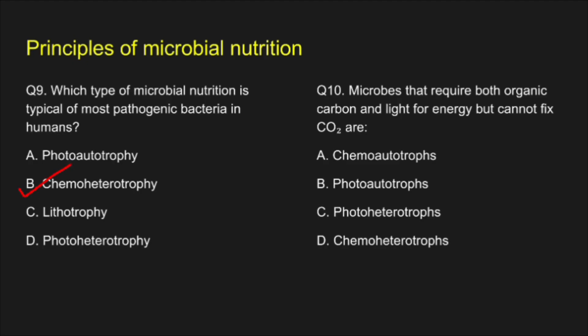Question 10. Microbes that require both organic carbon and light for energy but cannot fix carbon dioxide are — A. Chemoheterotrophs, B. Photoheterotrophs, C. Photoheterotrophs, D. Chemoheterotrophs. The correct answer for this question is option C: Photoheterotrophs.